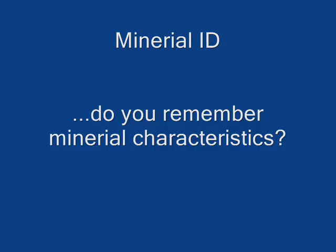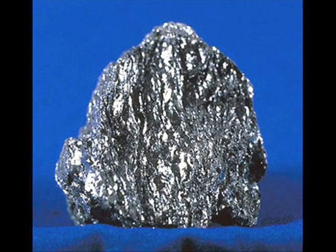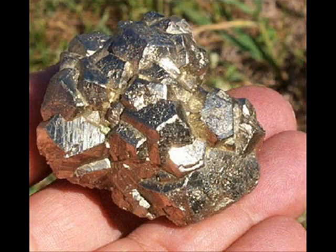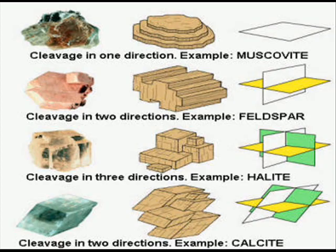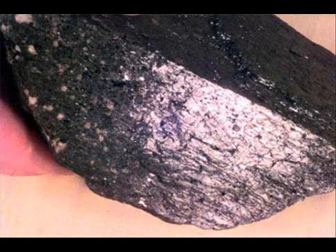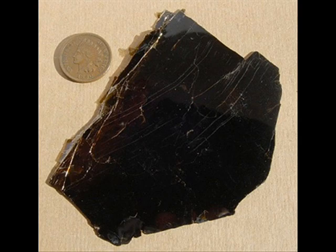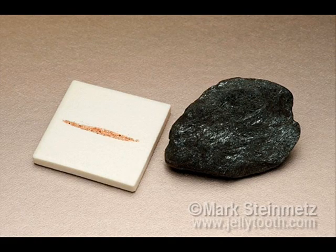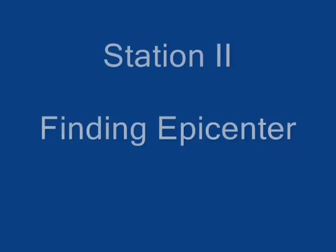Mineral characteristics include luster — is it metallic luster or not? Here are some examples of metallic luster. Cleavage is how a mineral splits apart. If you see a mineral with a shiny flat side, that's cleavage. Sometimes you'll see the cleavage in parallel layers. Streak is the color of the powder of the mineral. Other characteristics include hardness — is it harder than glass or softer than glass? Does it scratch it or not?